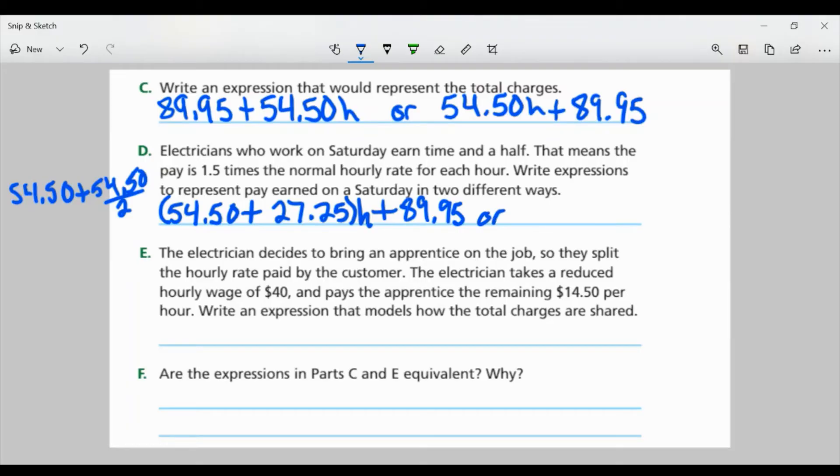And I have H for hours plus 89.95. Now, the other way we could write this is by combining these, right? When I add those together, I get 81.75H. And of course we have the fee of $89.95. So those are my two different ways to write this expression.